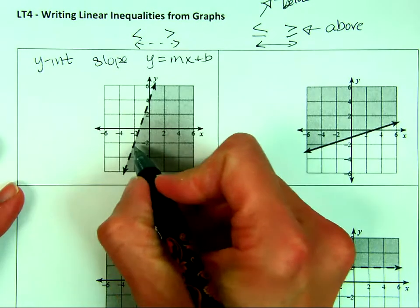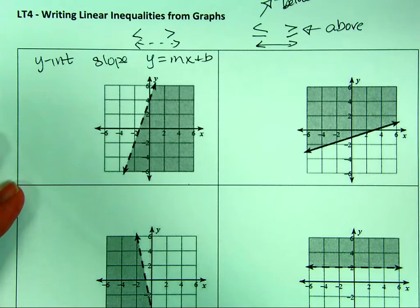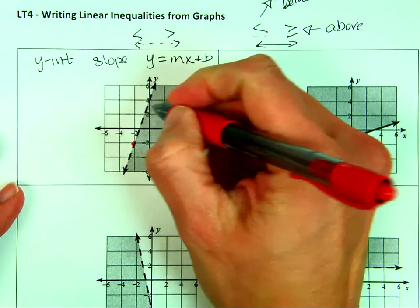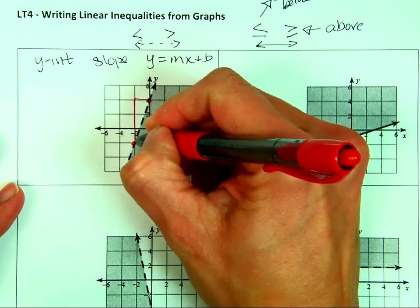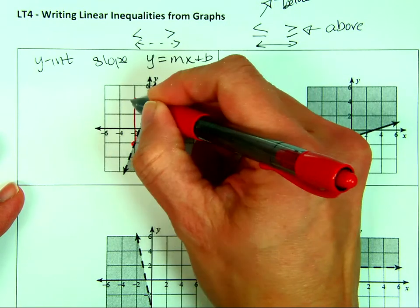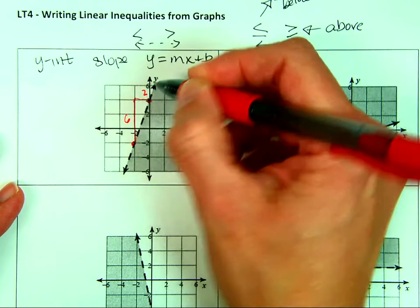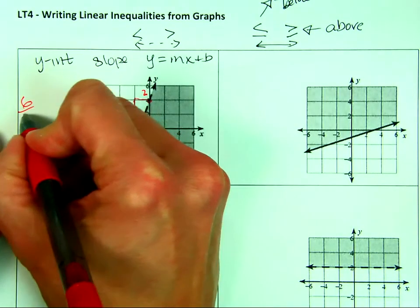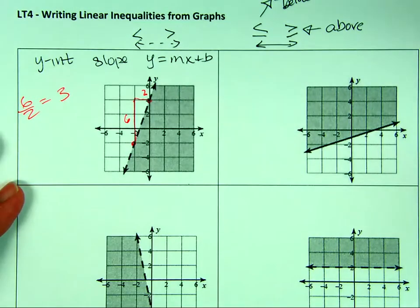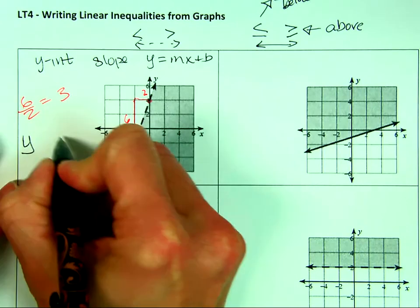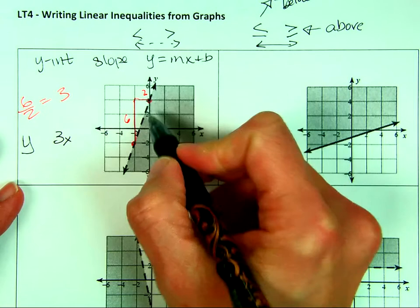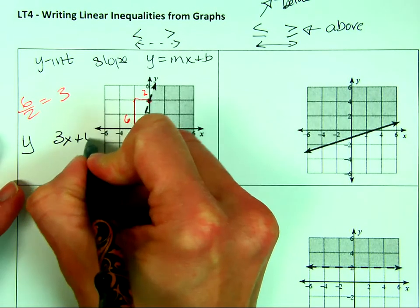So what's our slope? When I do my slope, I want to go to a grid point and then go to another grid point. And I want to see rise over run. Slope is rise over run. That's 2, 4, 6 and 2. So that 6 over 2 is my slope, which is just 3. So now I know it's y and a 3x. My y-intercept is 4, so it's plus 4.